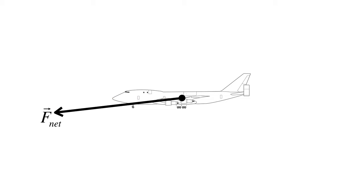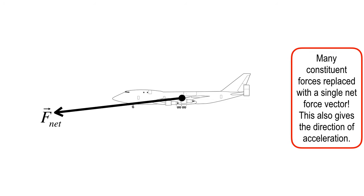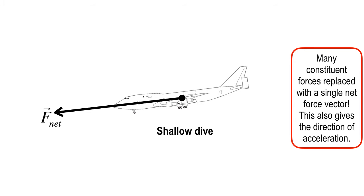Let's bring the 747 back in. We've got a lot of constituent forces, and they've all been replaced with a single net force vector. I just dreamed up a few vectors and we just did the diagrams. One of the nice things about this is you can tell the direction of the acceleration. With these constituent forces, the net force would be slightly downward and the 747 would be taking a shallow dive.